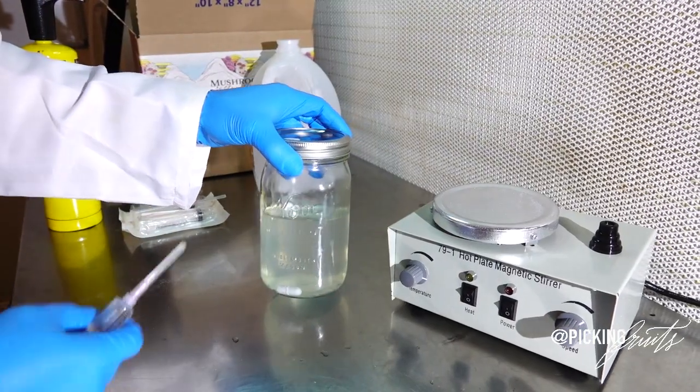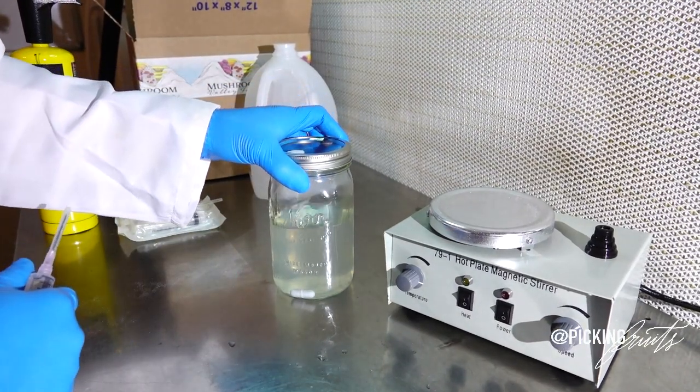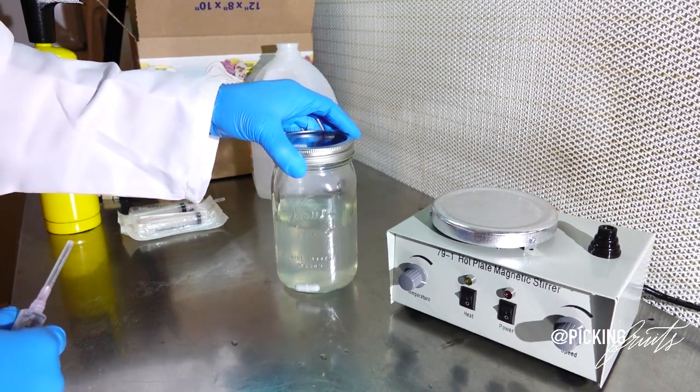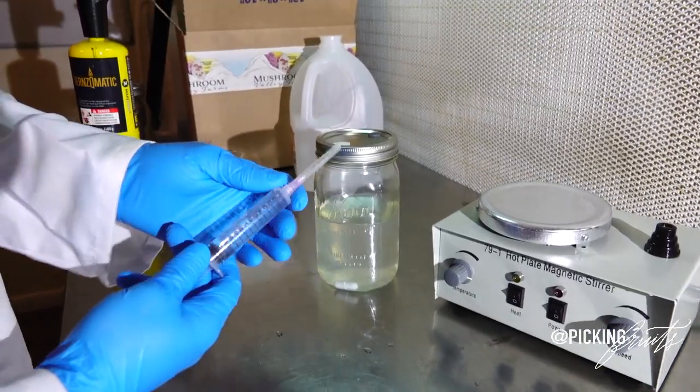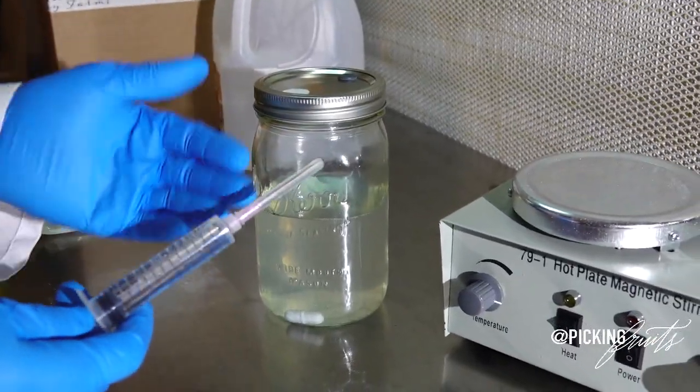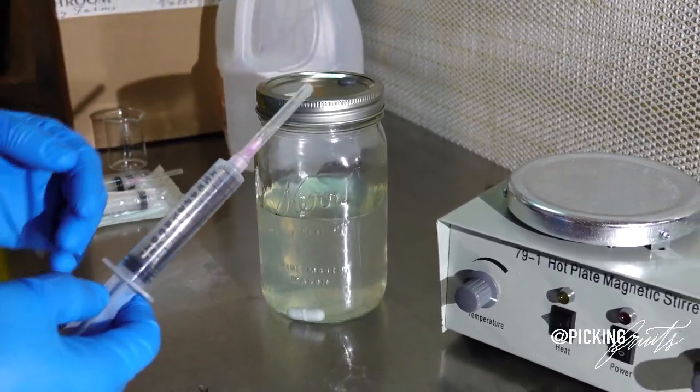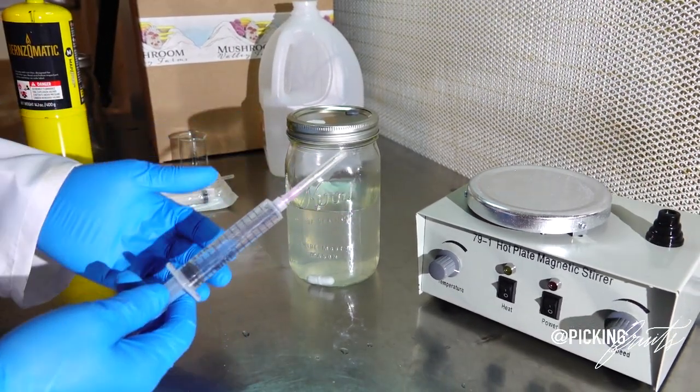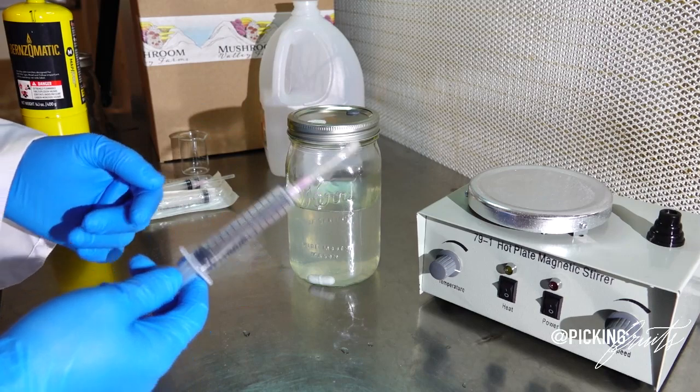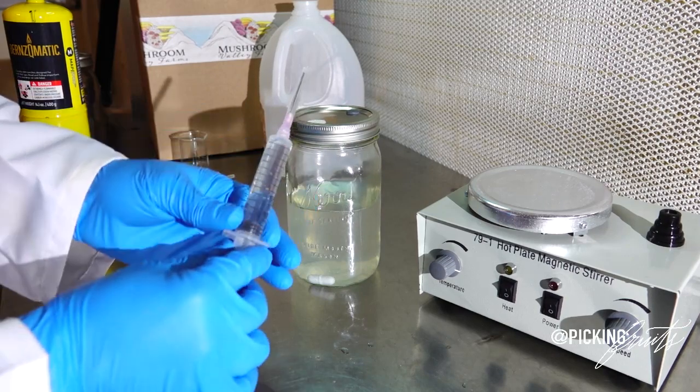So the next thing I'm going to do is I'm going to show you how to inoculate your liquid culture. So let's pretend that this already came out of the autoclave and it's cool to the touch. You're going to need to have an inoculant. You can find liquid cultures or spores from various vendors all over the internet. You can also visit our website at pickingfruits.com and you can find a nice variety of inoculants there. In this case, I'm only using water.